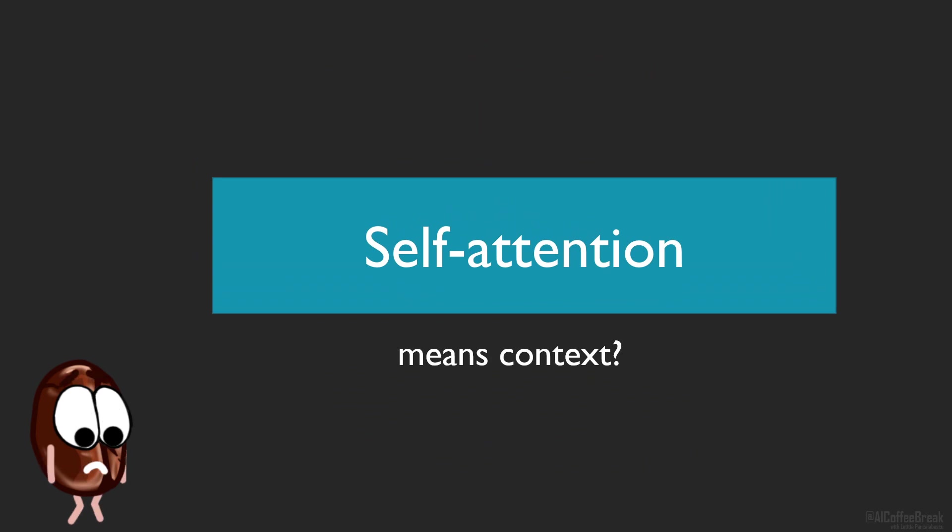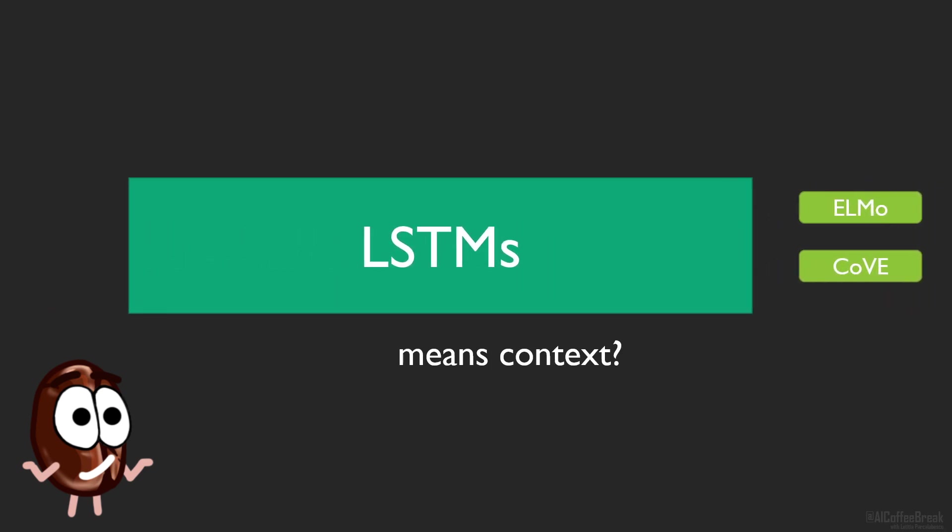Miss Coffee Bean must stop you there on the contextual bit. Contextual representations in pre-trained language models were not a first with transformers. For example, ELMo and CoVe enabled this with LSTMs. Also, pre-training and fine-tuning was not invented with transformers. Pre-training was not that big in NLP but certainly in computer vision where basically every CNN backbone was pre-trained on ImageNet.